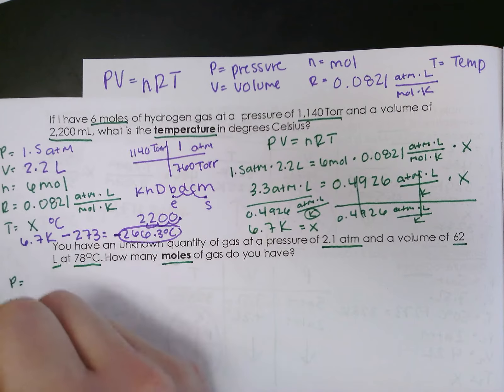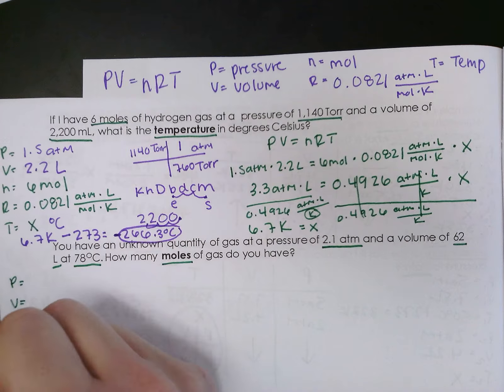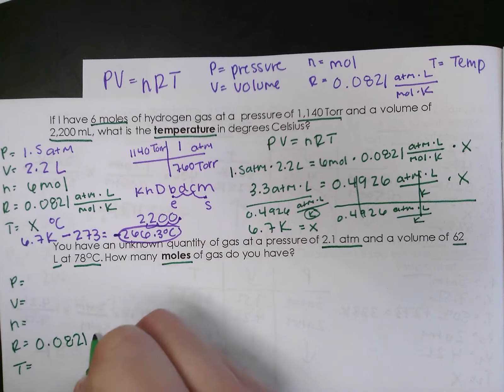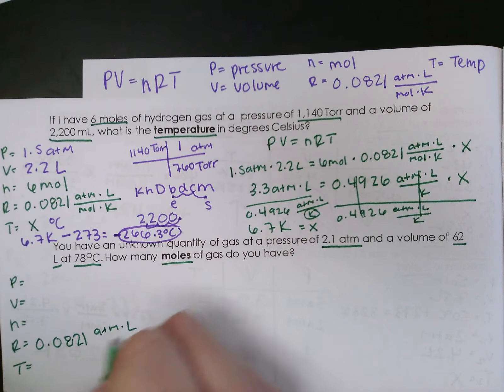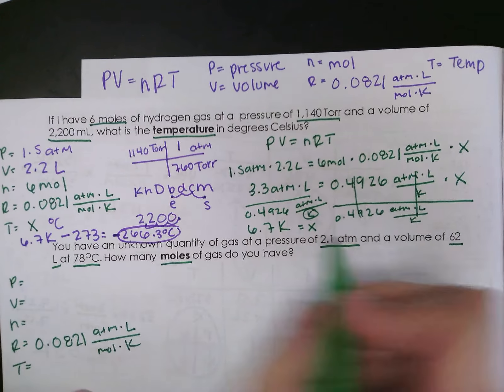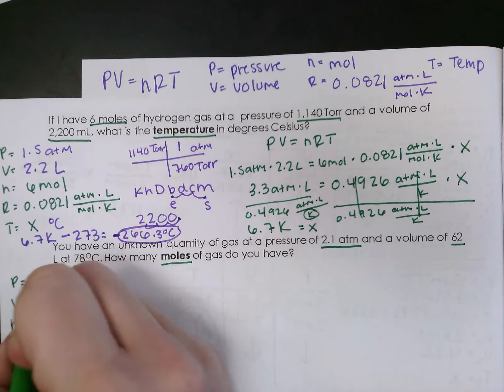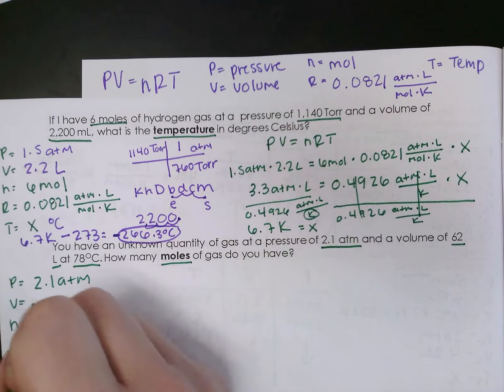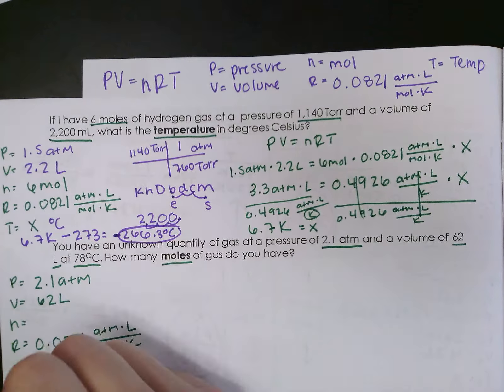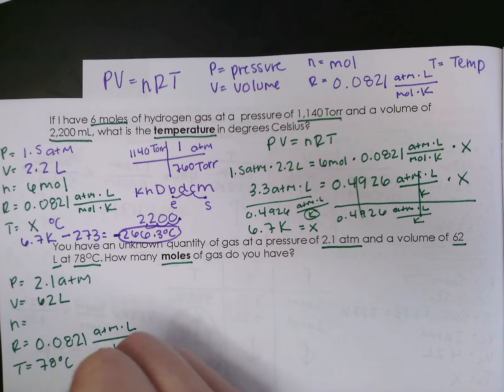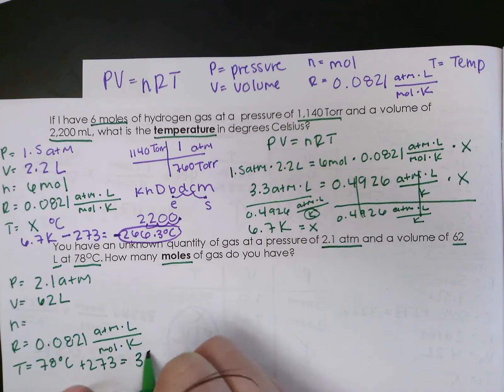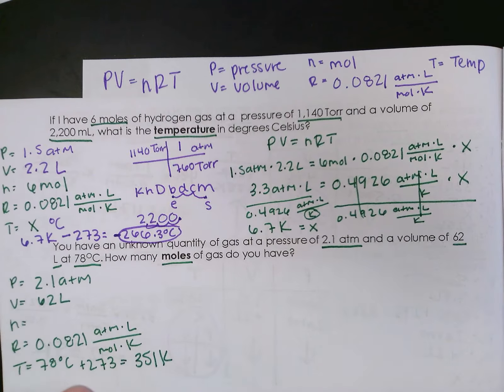The pressure, volume, moles, constant, and temperature. I already know my constant. I'm going to go ahead and write it down. My pressure is already in atmosphere, so I'm just going to write it down here. My volume is already in liters. And I'm going to have to change my degrees Celsius to Kelvin just by adding 273. 351K.